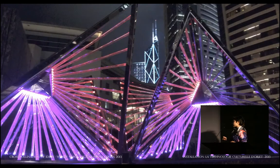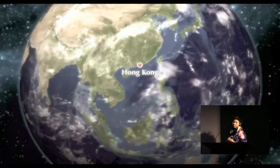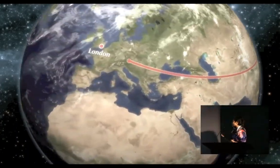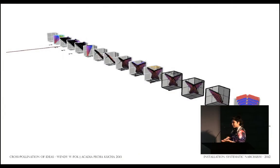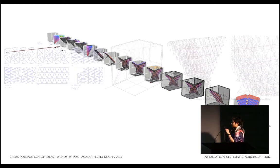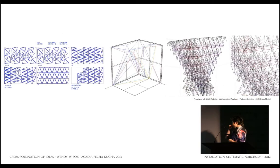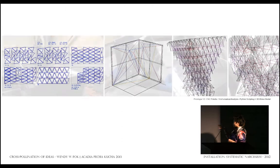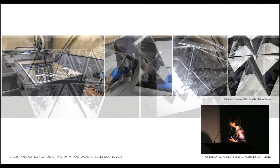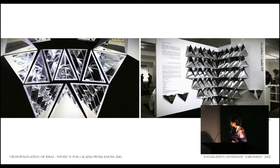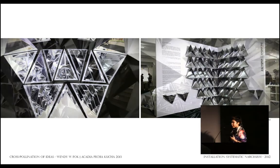I also did a recent installation for London Design Week called Systematic Narcissism. It's a project we were experimenting with mostly Python scripting and different iterations, looking at flat cut and playing with more of the CNC. We looked at the mirroring effect of things, and we got an A-plus Architizer finalist for this project for architecture and fabrication.